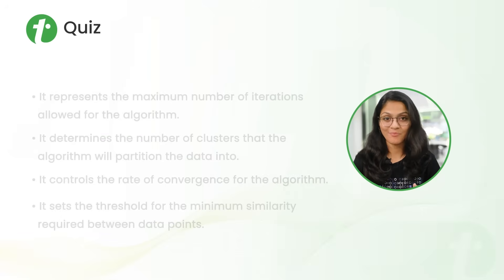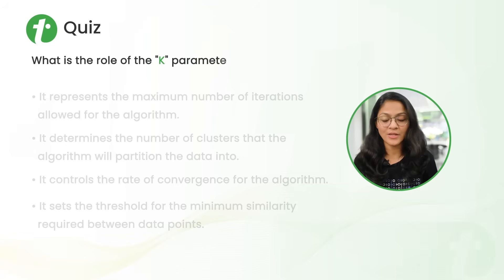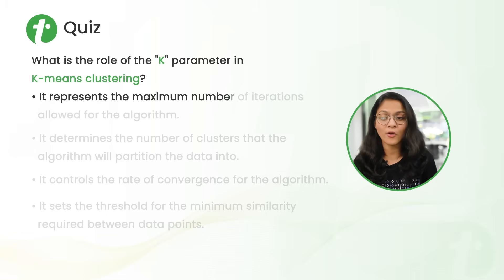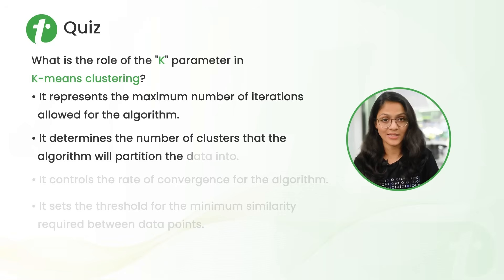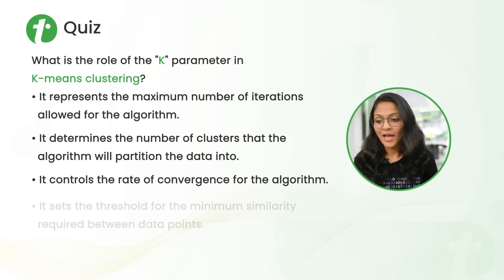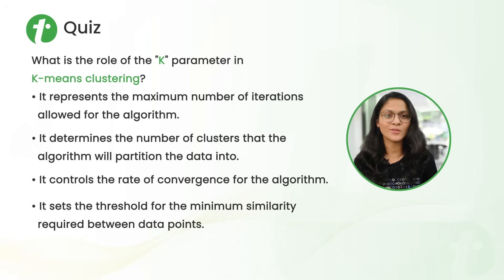Now it's quiz time. Here is a question for you all — comment your answer below. The question is: what is the role of the K parameter in K-means clustering? Options are: (A) it represents the maximum number of iterations allowed, (B) it determines the number of clusters the algorithm will partition the data into, (C) it controls the rate of convergence, or (D) it sets the threshold for minimum similarity required between data points.